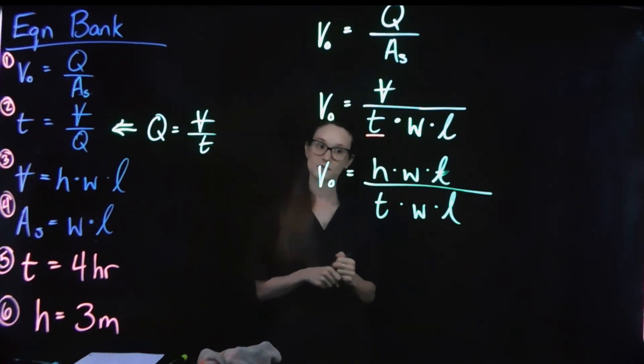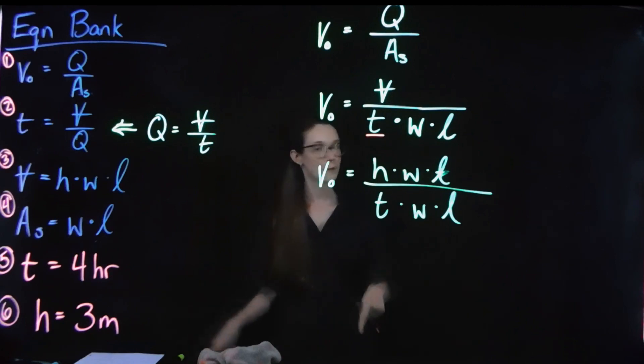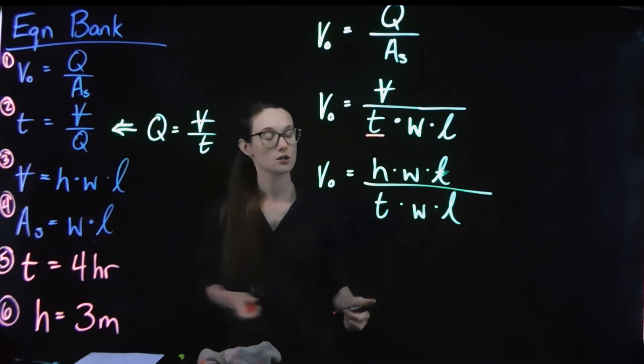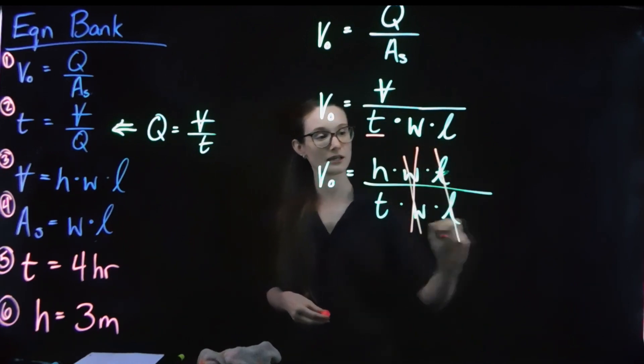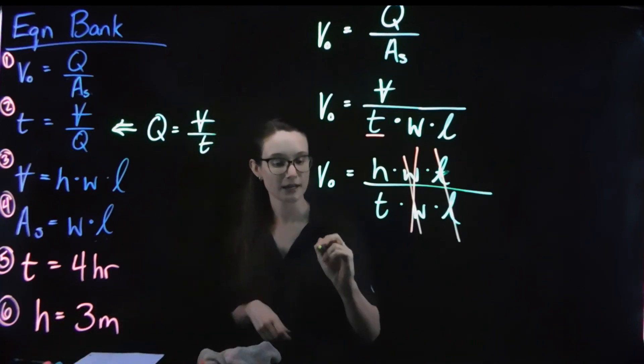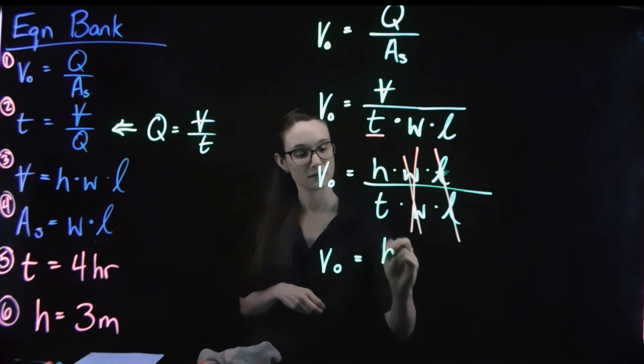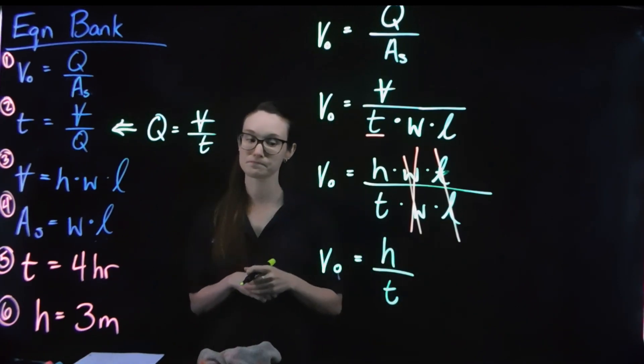Hey, kind of convenient. I've got matching terms in the numerator and the denominator. And if we think all the way back to week one, if I divide a number by itself, it's just one. So my width and my width cancel out, my length and my length cancel out. So I can reduce this all the way down to my overflow velocity is my tank height divided by my detention time.